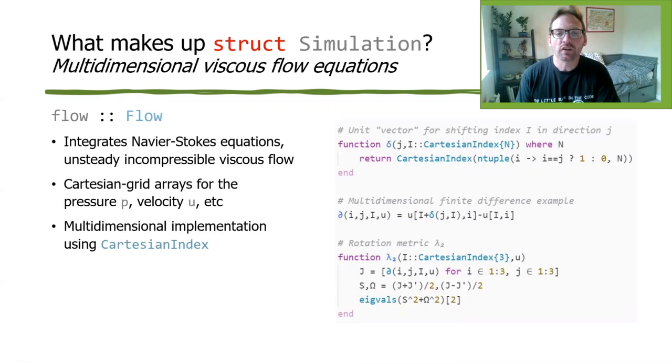So I wanted to go very briefly into a couple of the neat Julia specific parts of the flow solver. So first, the flow struct inside the simulation struct, that holds the momentum equations. Those are the Navier-Stokes equations. And that's how the flow is integrated in time. The kind of fun Julia part is that the pressure and velocity and all the rest of those, they're just simple multidimensional arrays. And by using Cartesian index and Cartesian indices, the range part, we can write totally multidimensional code. So it can run 2D simulations or 3D simulations with exactly the same code. You just have to start with different dimension arrays.